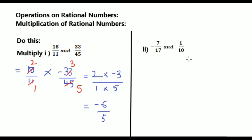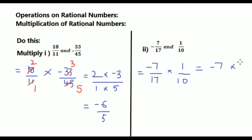See now second sum: multiply -7/17 and 1/10. That equals to -7/17 into 1/10. That equals to multiply numerators -7 into 1 by 17 into 10. That equals to -7 into 1 = -7, by 17 into 10 = 170. So the answer is -7/170.